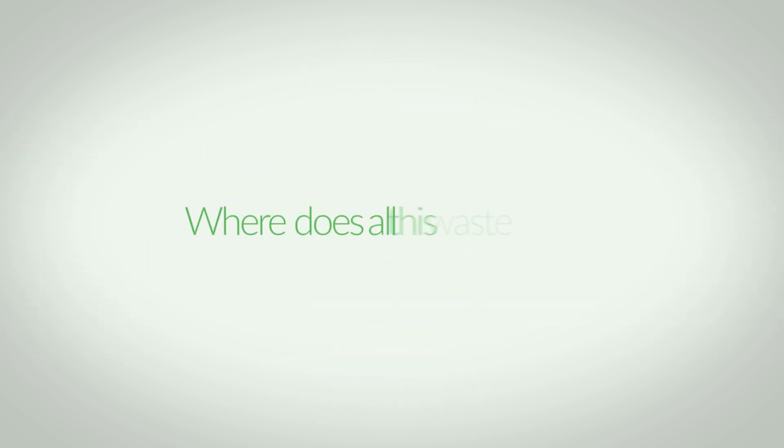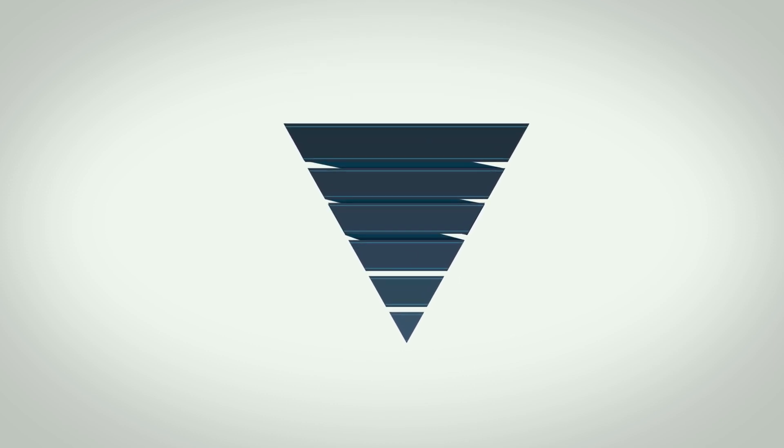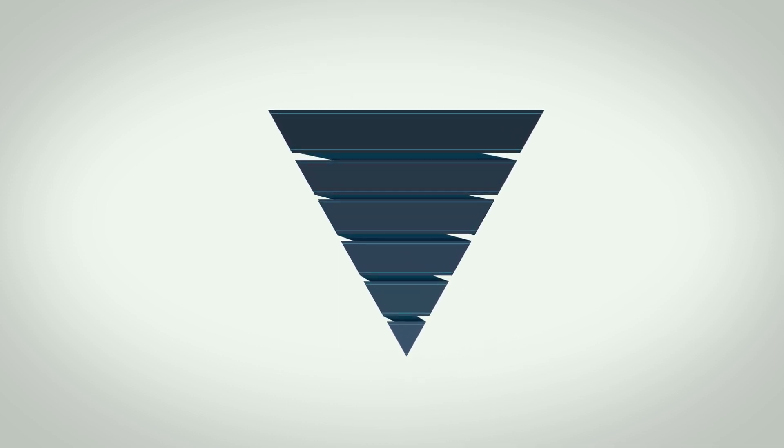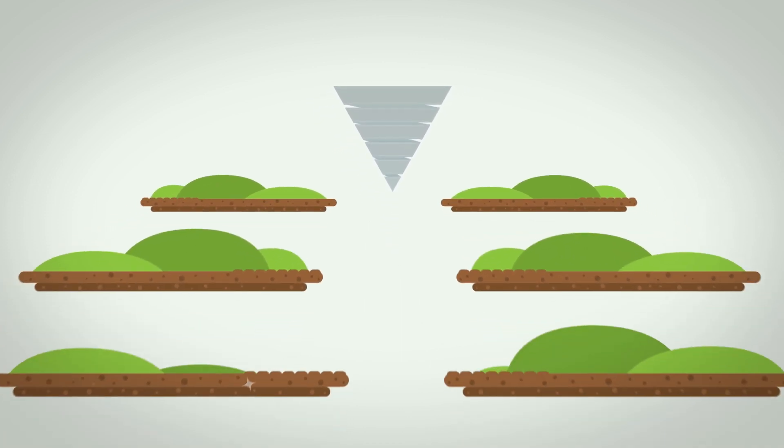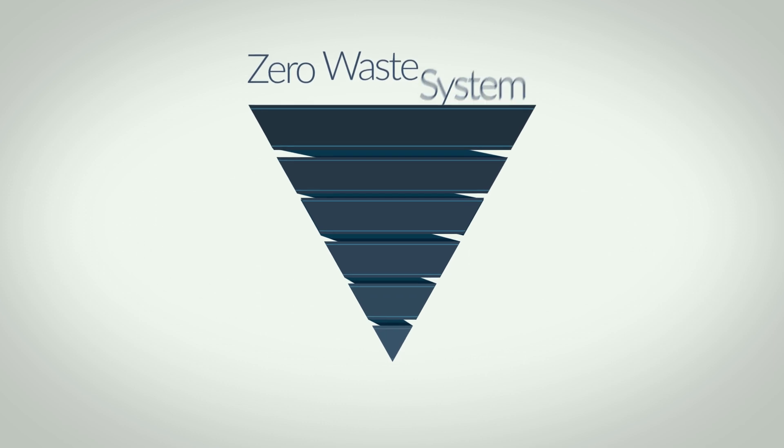Where does all this waste go? In most developed countries, waste is managed through a reverse hierarchy, or inverted pyramid structure. This is used to minimize the amount of waste that ends up in landfill, with the ultimate goal of a zero waste system creating a circular economy.